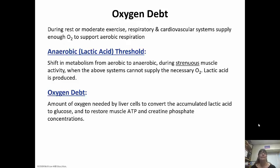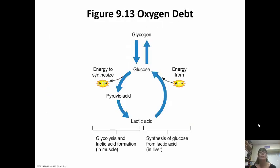The oxygen debt is the amount of oxygen needed by the liver cells to convert all of that accumulated lactic acid to glucose and to restore muscle ATP and creatine phosphate concentrations. Glycogen is just the storage form of glucose. We need energy to synthesize ATP and we need oxygen for aerobic respiration to happen. Without oxygen we're going to have lactic acid formed. The liver can convert that lactic acid back to pyruvic acid, but it takes some time, so we need a lot of oxygen coming in in order to function properly.